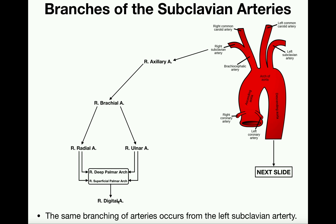The left side, from the left subclavian artery, is identical — just substitute L's or 'left' for all the R's. In the next video we'll track blood flow down the descending aorta and cover the arteries of the abdominal region, and eventually we'll look at all the arteries inside the head and brain. Please like this video and subscribe for future videos and notifications.